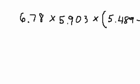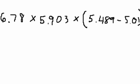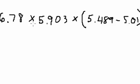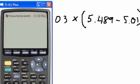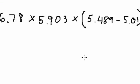So here's the next one. We have 6.78 times 5.903 times 5.489 minus 5.01. Again, do parentheses first. So I'm going to take out the calculator, and I'm going to do the parentheses first, which is 5.489 minus 5.01, and I'm going to get 0.479. So I'm going to write that here, 0.479.